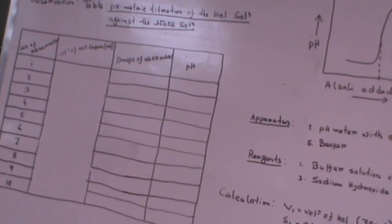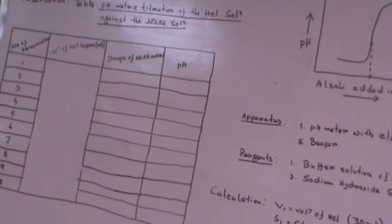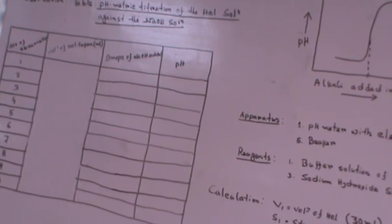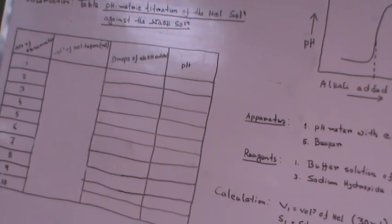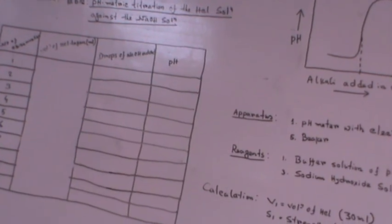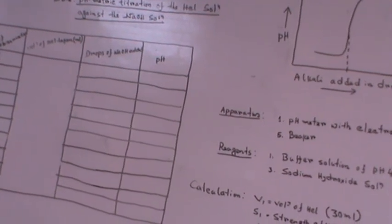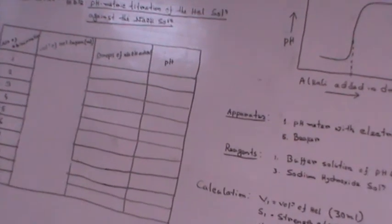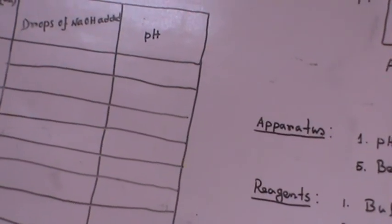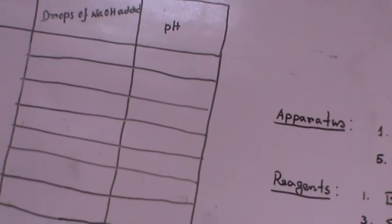Then in the second column, this is volume of HCL taken which will be standard for our case. We will take 30 ml of HCL, and then drops of NaOH added.